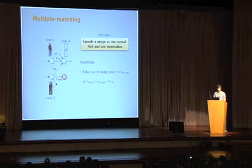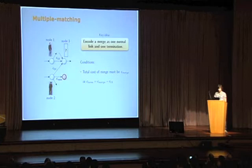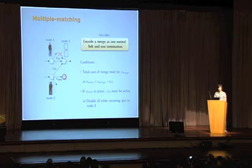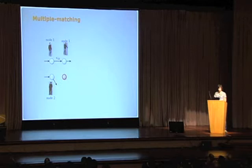Here's what we propose. The key idea is to encode a merge as one normal link and one termination. You can see I added a virtual node to one of the nodes — in this case node two. We need to satisfy two conditions. The first is that the total cost must be C-merge, which restricts the termination cost to the equation shown. The second condition is that if the termination node is active, then the other arc C1-3 must also be active. This implies that termination only occurs in a merge, requiring that we disable all incoming arcs to node three. This is the graph structure we propose.